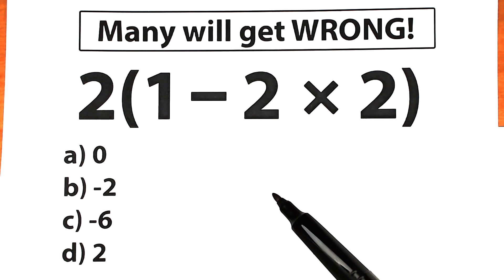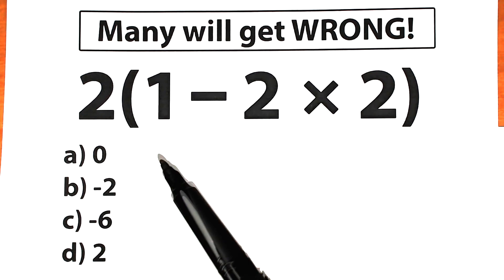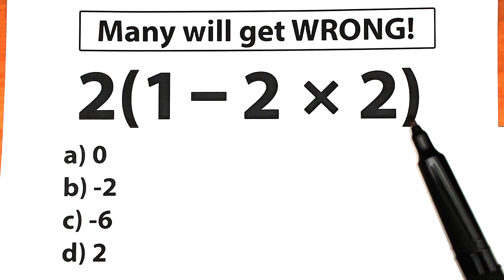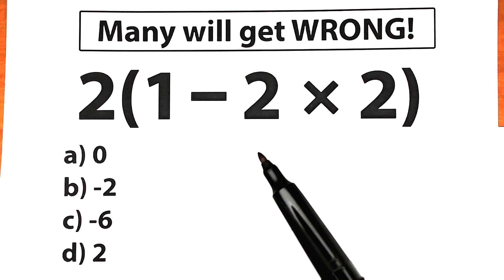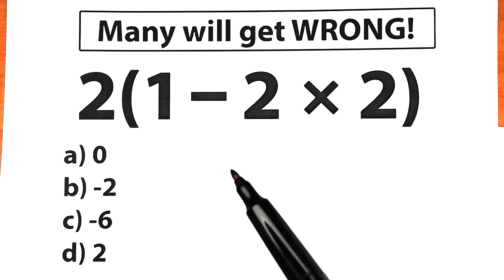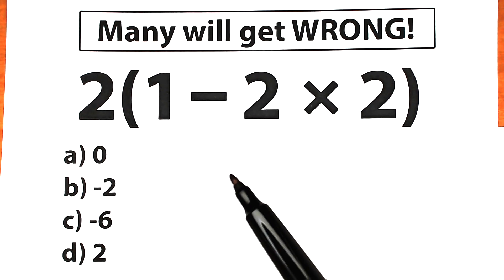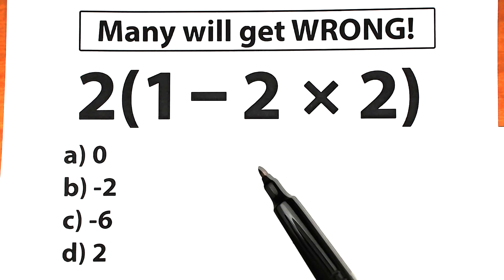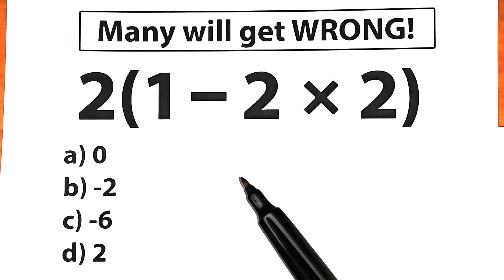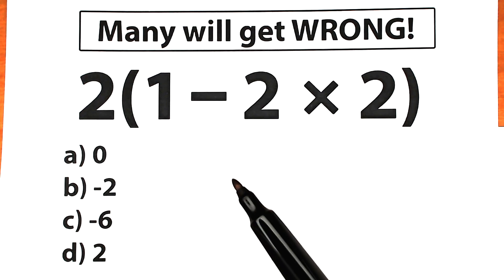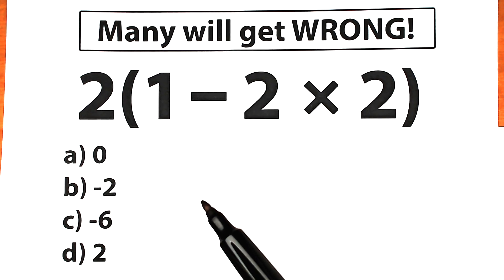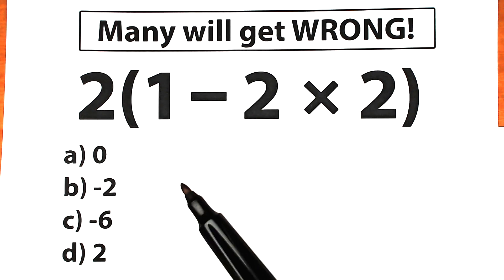Welcome back to my channel Mathematics. Today we have a very tricky challenge: 2 times (1 minus 2 times 2) inside parentheses. Maybe this is the easiest challenge ever seen, but a lot of students make this common mistake — they don't know what is the correct order, the correct property, correct definition, correct solution. So right now I want you to pause the video and try to solve it by yourself, and at the end of the video we will check our answers.